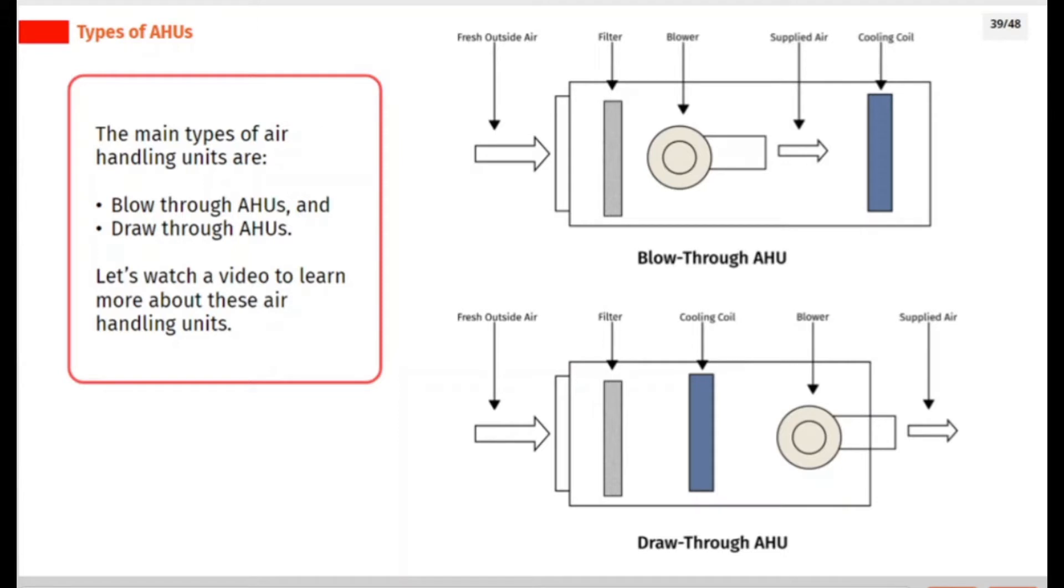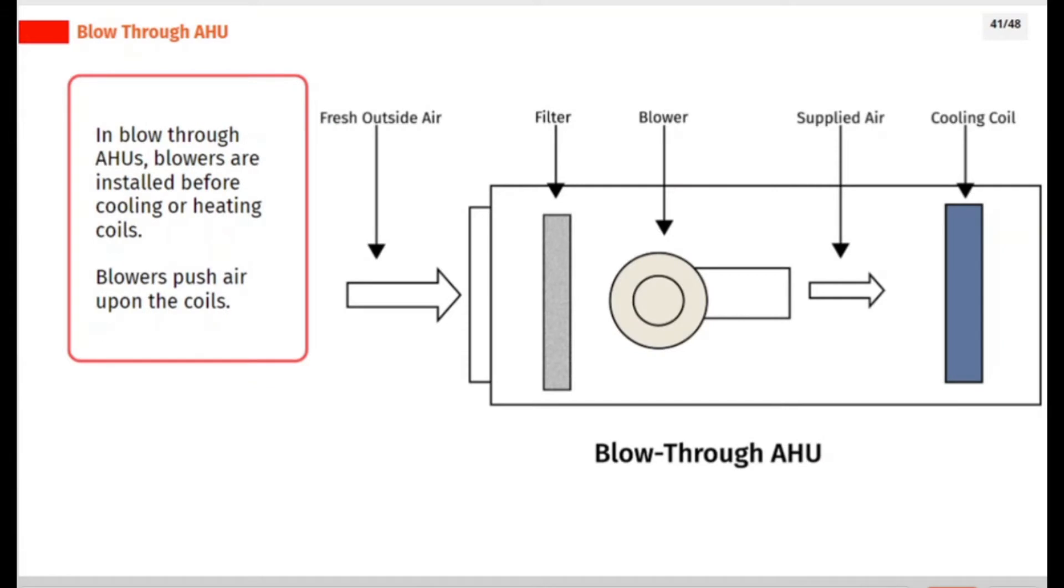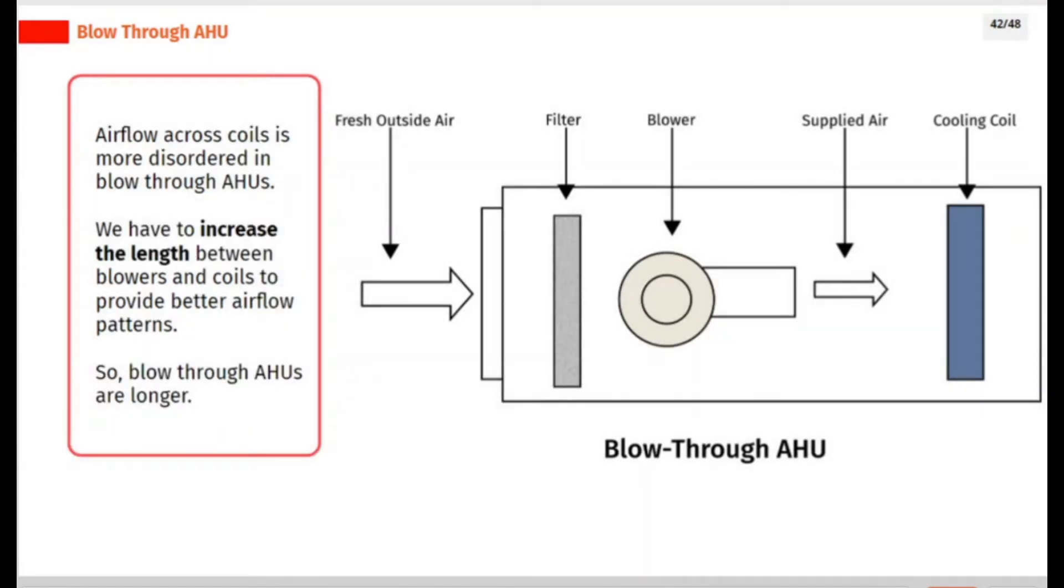In blow through AHUs, blowers are installed before cooling or heating coils. Blowers push air upon the coils. Airflow across coils is more disordered in blow through AHUs. We have to increase the length between blowers and coils to provide better airflow patterns, so blow through AHUs are longer.